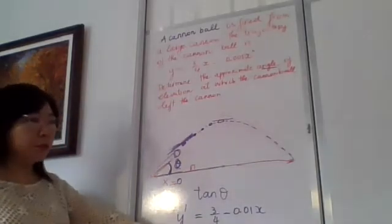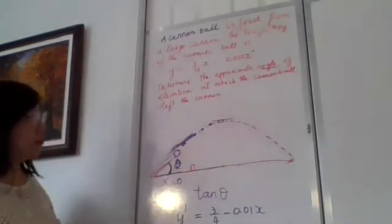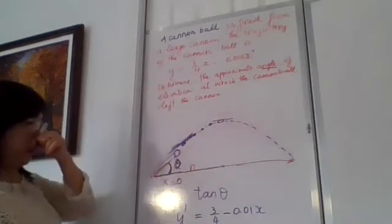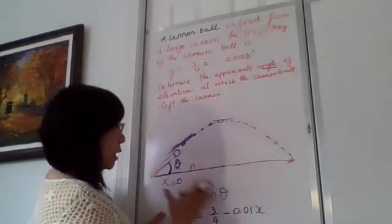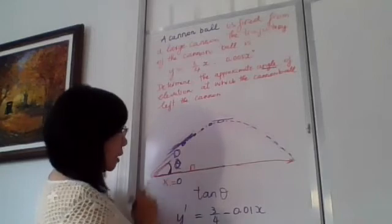So this is the slope of the tangent line, the derivative of this equation, right? Now this slope will decide the angle theta, the angle of elevation.